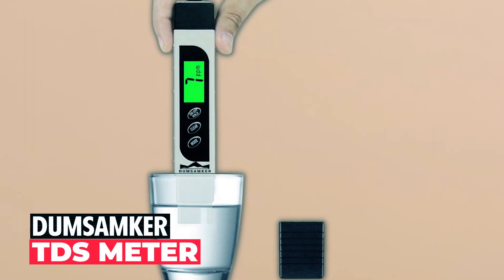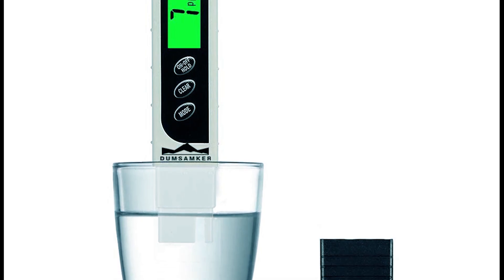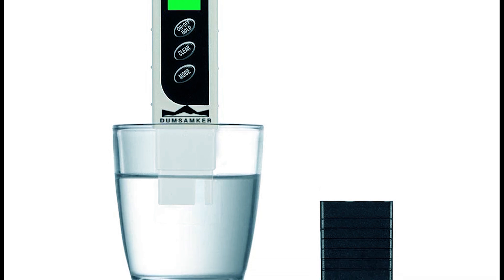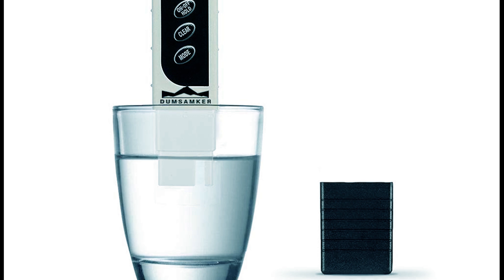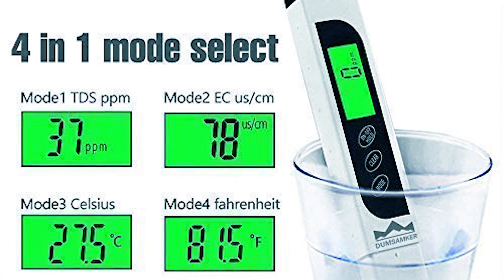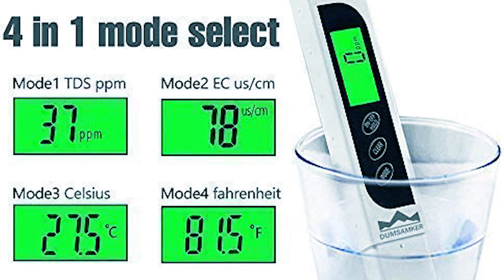Dumsamker DUTDSW TDS Meter. The Dumsamker DUTDSW TDS Meter is a compact 3-in-1 device designed to measure total dissolved solids in parts per million (ppm) and water temperature. It provides comprehensive water purity readings with a quick button press and features a measurement range from 0 to 9,990 ppm.